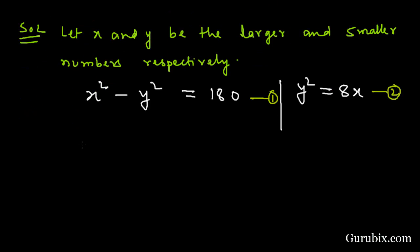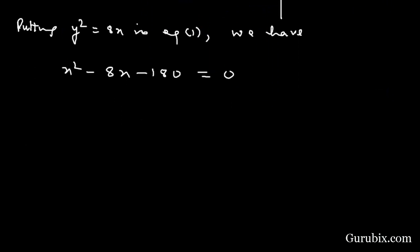Now we shall put the value of y square, which is 8x, in equation number 1. We have x² - 8x - 180 = 0. Now we shall factorize this quadratic equation by using the method of splitting the middle term. Then it will be x² - 18x + 10x - 180 = 0.